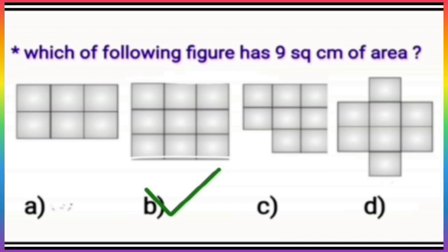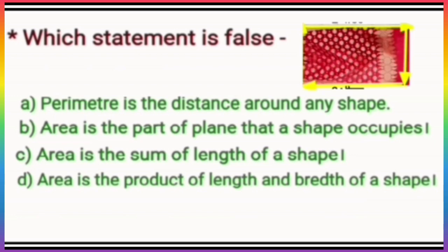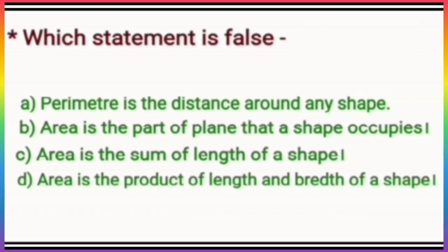So children, which figure has 9 square centimeters of area? Yes, it is option B. Let's put a tick here. Now the next question is: which statement is false? If the first option is 'perimeter is the distance around any shape,' yes, of course, because we find the perimeter by adding all its sides. In this way, option A is the correct statement.